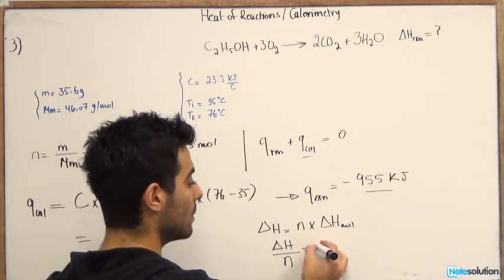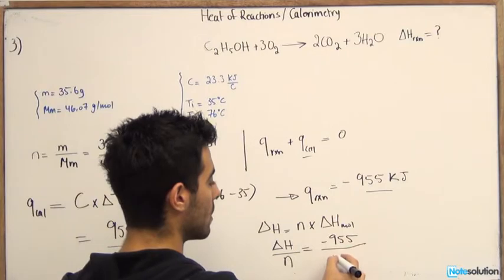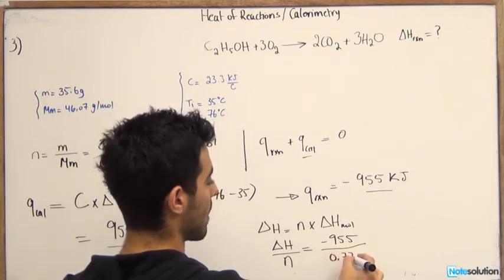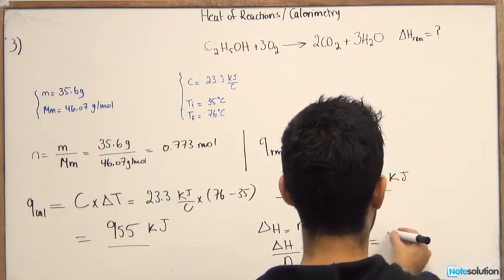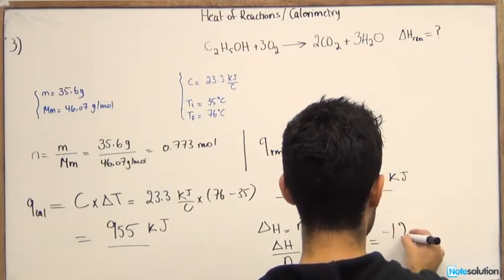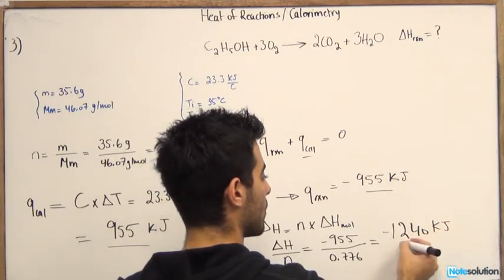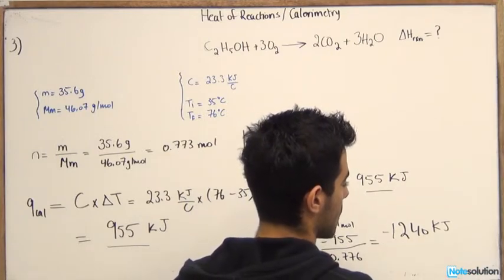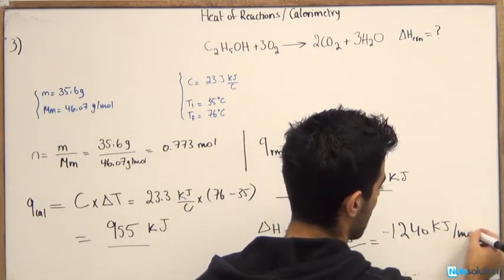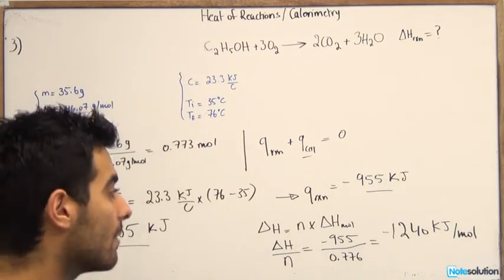So now we do negative 955 over 0.776. That should give you around negative 1240 kilojoules per mole. Or you could write it in this way, per mole over here.